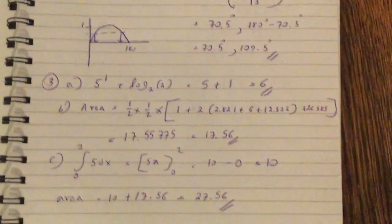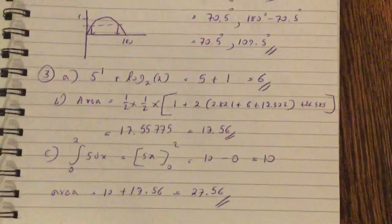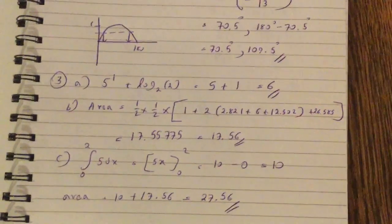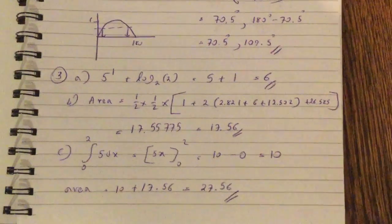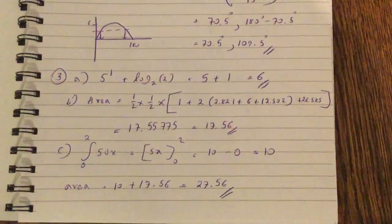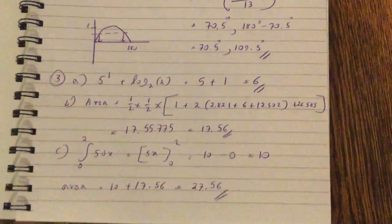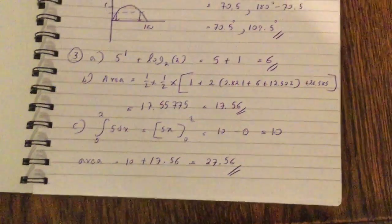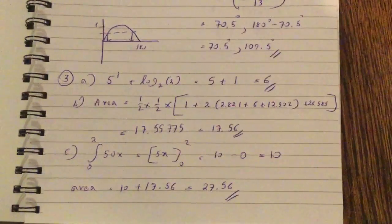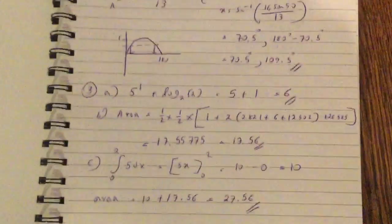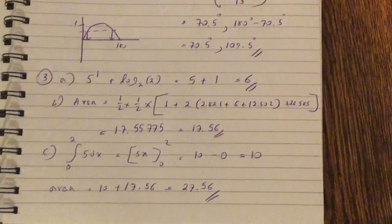Question 3 part a: 5 to the power 1 equals log base 2 of 2, which is 5 plus 1, which is 6. The area using the trapezium rule is 17.56. The integral from 0 to 2 of 5 dx is 5x between 0 and 2, which is 10. So the total area required is 10 plus 17.56, which is 27.56.